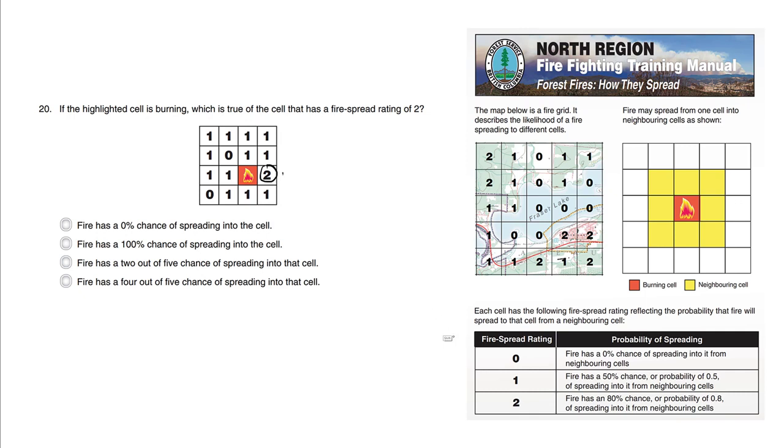Now we need to refer back to the previous page. We read what the number 2 means. It has an 80% chance or probability of 0.8 of spreading into its neighboring cells.